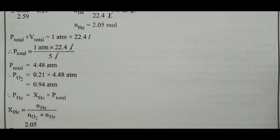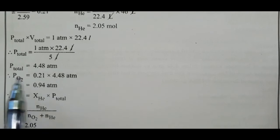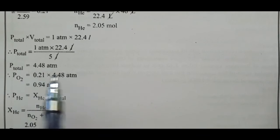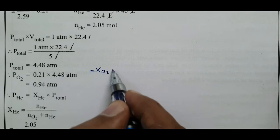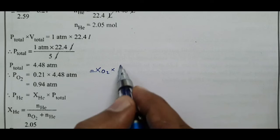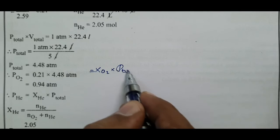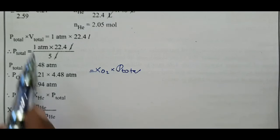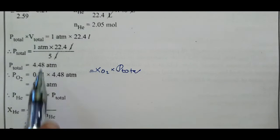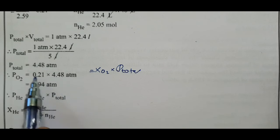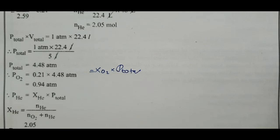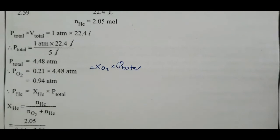Partial pressure of O2 = mole fraction of O2 × total pressure = 0.21 × 4.48 = 0.948 atm.